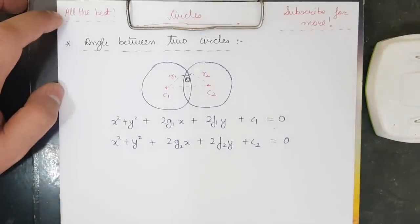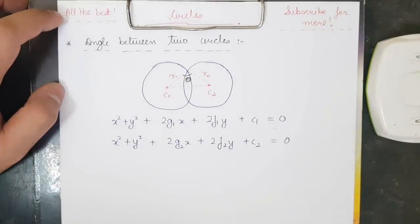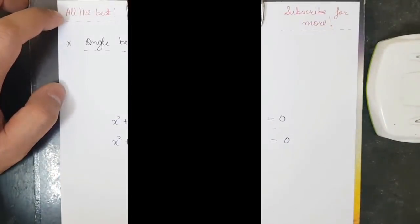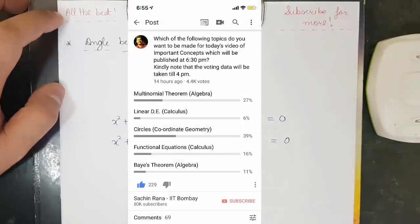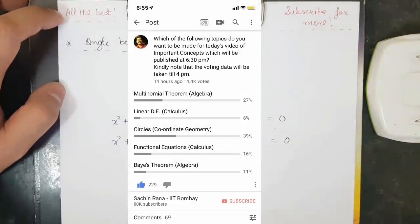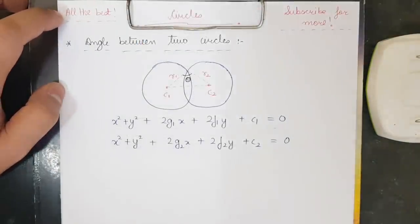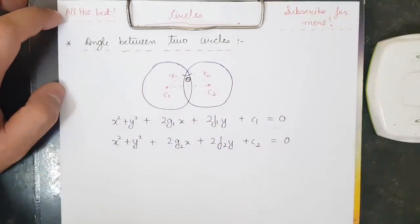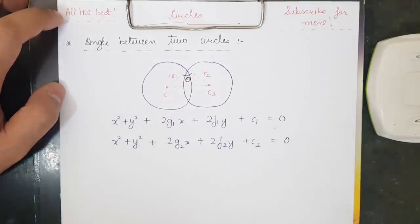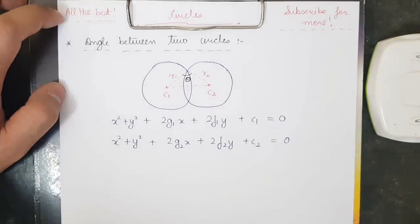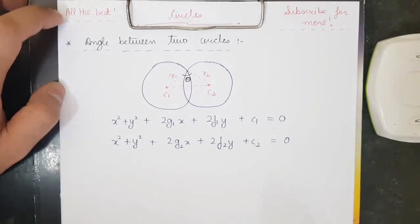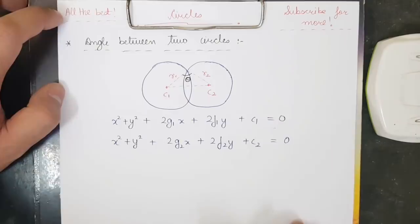Welcome to the new video. As you can see on the screen, the circles topic has won. I shall be taking the important concepts for circles - the two-circle cases. The first one is the angle between two circles, and then the two-circle cases where multiple cases are dealt with, from which one question is guaranteed every year.